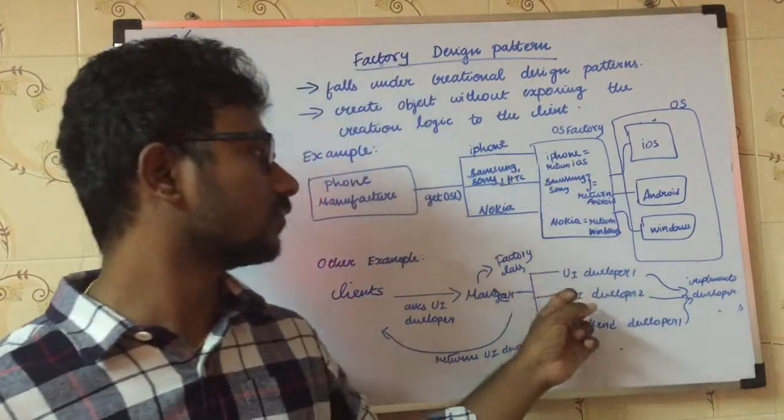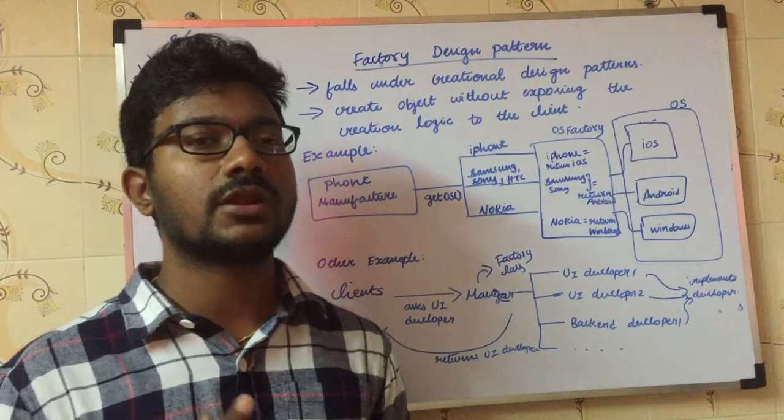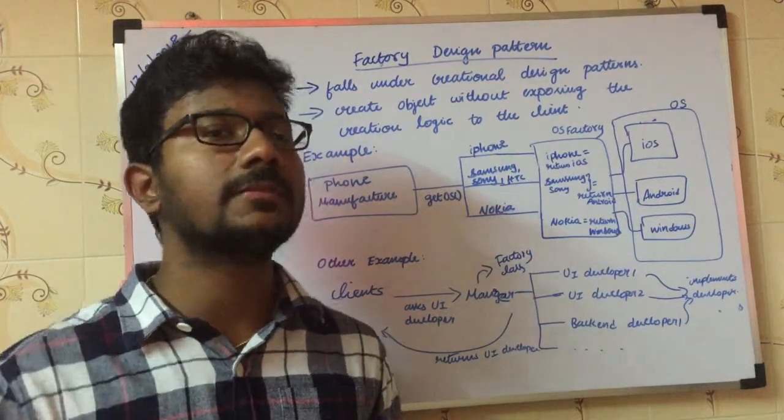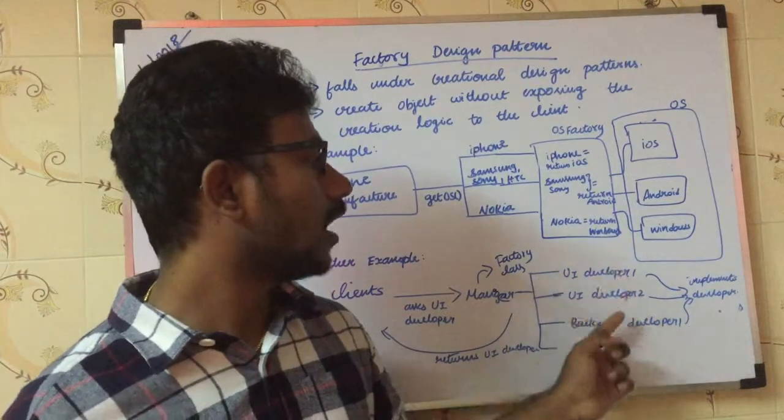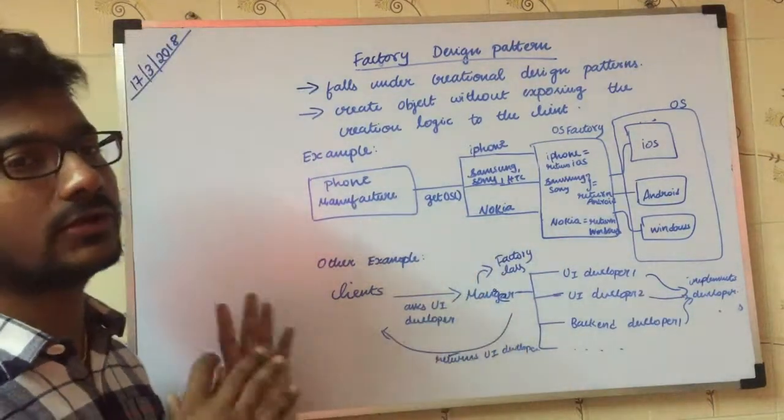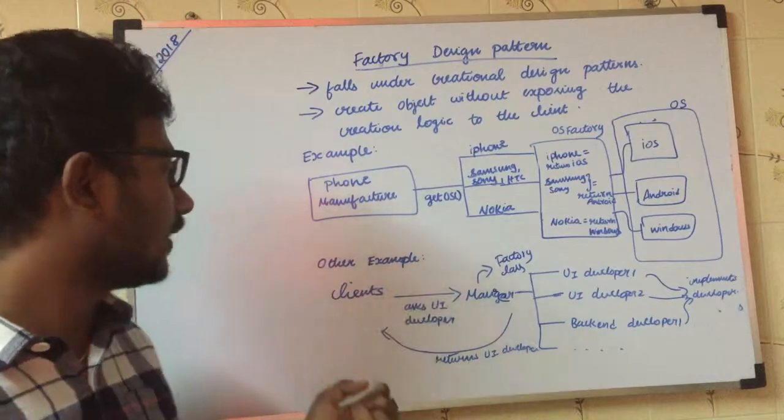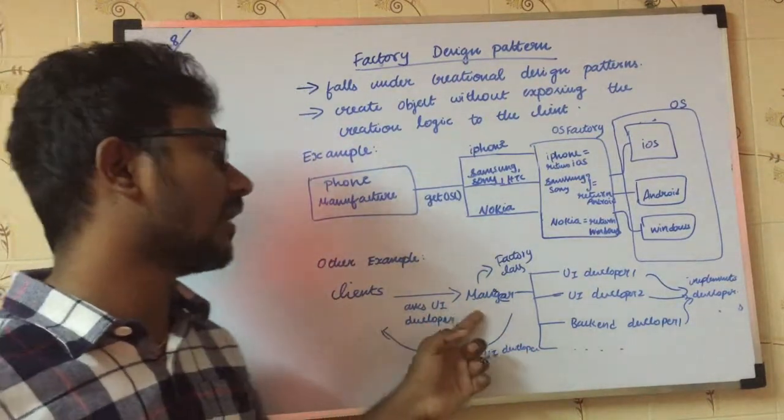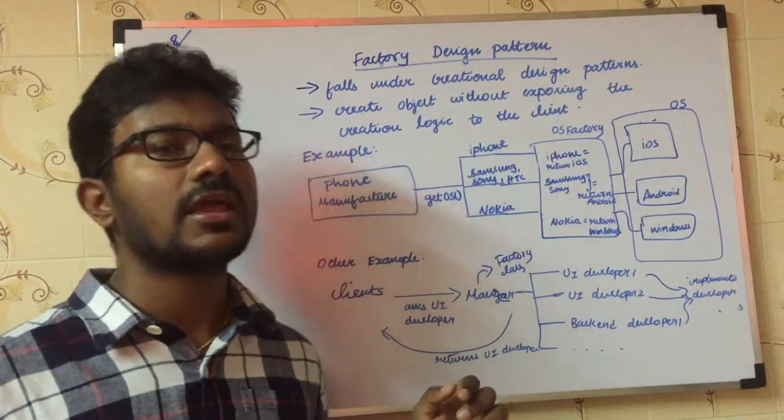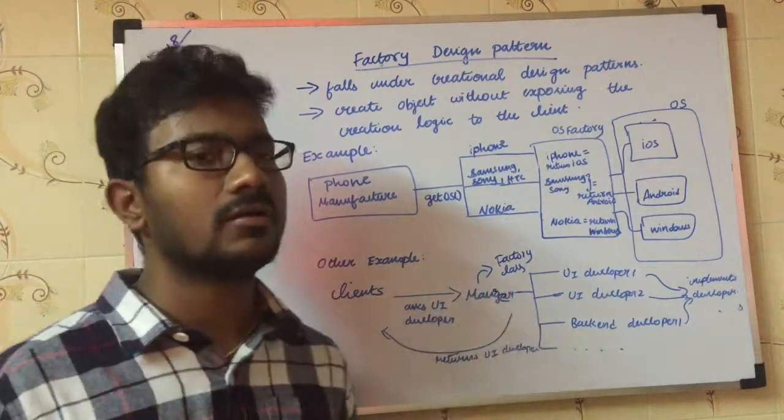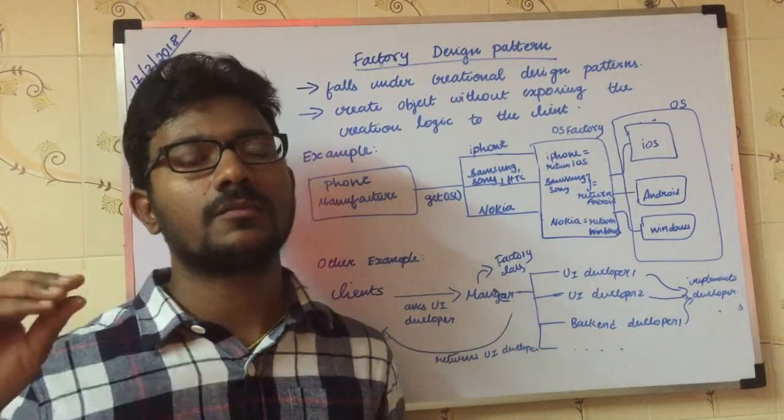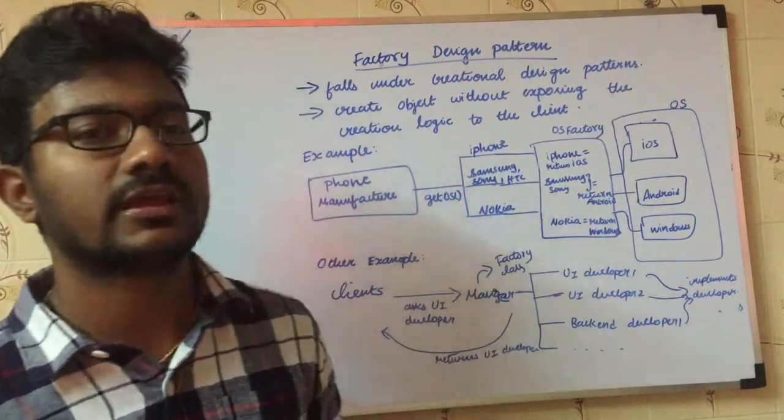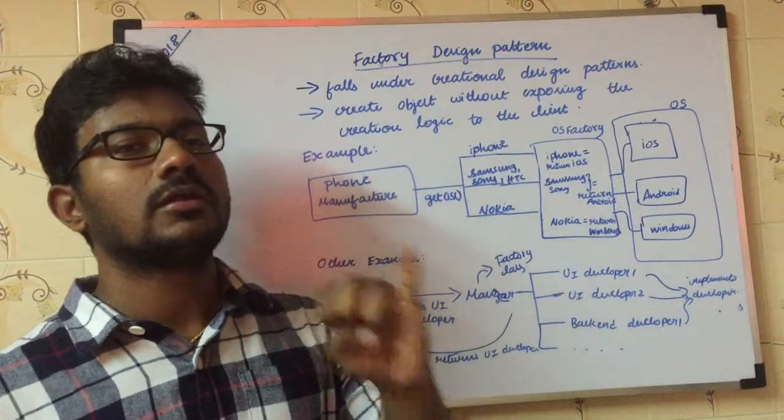He will try to pick the best one from among these UI developers for the contract job. After some time, a small shop owner approaches the manager and says: I need some UI developer but I will pay only a less amount of money. Manager analyzes that request - here the criteria is less money and UI developer.